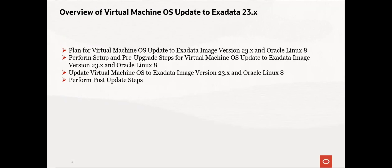Here is an overview of virtual machine OS update to Exadata 23.x. Firstly, plan for the VM OS update wherein you have to confirm the requirements. Use the latest certified Exadata image version. Understand the patch manager utility. Run exa-check to validate the overall health. Configure SSH equivalents. Create the patch manager group file with a list of the nodes in the VM cluster except the driving system. Patch manager will use this file to perform actions such as backup, pre-check, and upgrade.